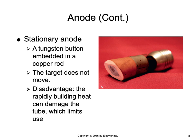There are two designs for the anode. One is the stationary anode, which is basically a tungsten button embedded in a copper rod. It is called stationary because the target does not move. Stationary anodes were used in old tube designs and may still be found in dental offices or those requiring very small exposure techniques. The primary disadvantage is that because the electrons always hit the same small target area, heat builds up rapidly and can damage the tube, limiting the exposure technique factors that can be used. This limitation spurred the development of the rotating anode design.